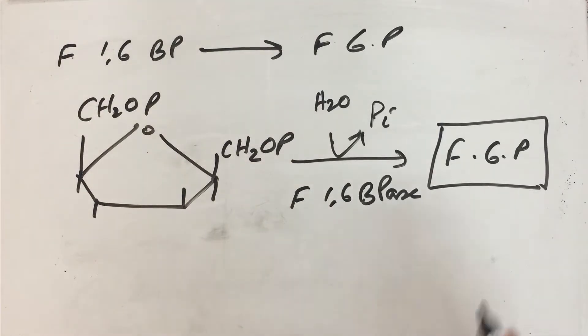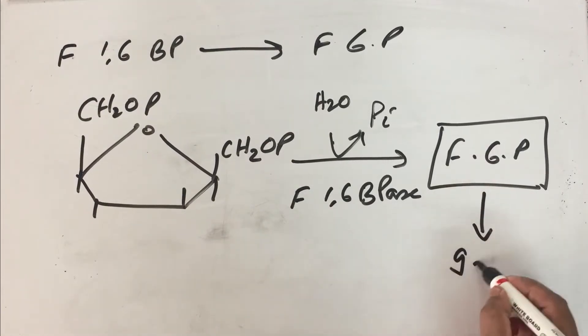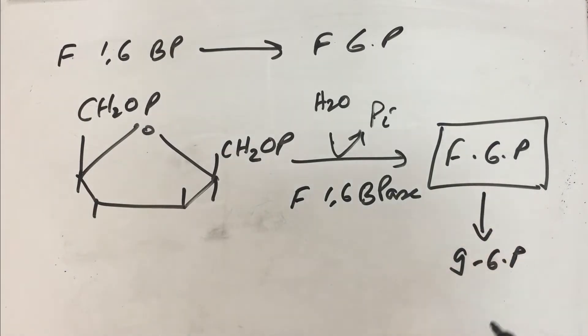Once we have fructose-6-phosphate, this will be converted back into glucose-6-phosphate. The isomerase enzyme will work and you will get glucose-6-phosphate. Now in most tissues, gluconeogenesis will stop with this formation of glucose-6-phosphate because glucose-6-phosphate will have multiple roles to play.